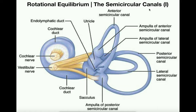Remember when we talked about the vestibule, the vestibule was only the utricle and the saccule. If we talk about the vestibular apparatus as a whole, the vestibular apparatus is basically the vestibule — utricle and saccule — plus three semicircular canals.